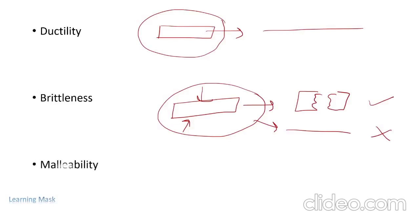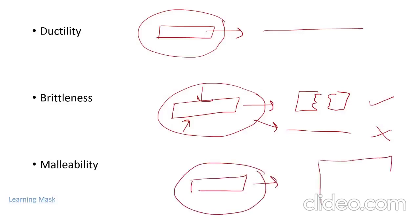The next property is malleability. Malleability is a property in which a material can be changed into thin sheets by application of pressure from all sides. We are changing the material into sheets, so this property is known as malleability.